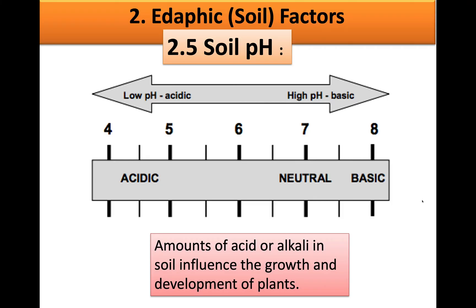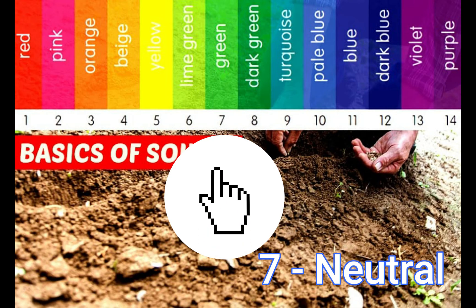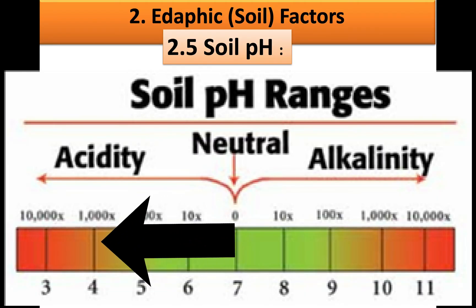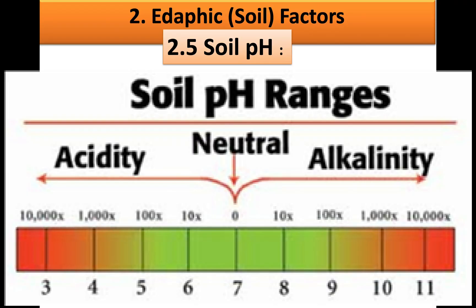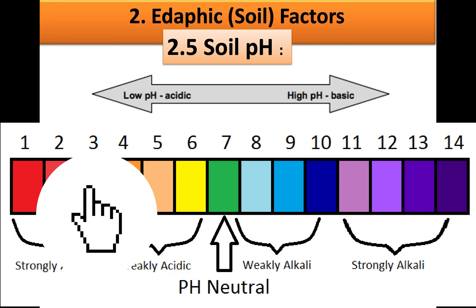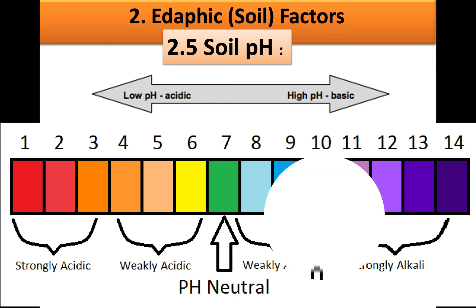Now let's talk about soil pH. pH refers to the acidity or alkalinity of a substance — in this case, how acidic or how alkaline the soil is. It is measured in pH units using a pH scale, which normally runs from 0 to 14. A pH of 7 indicates that the soil is neutral. As numbers decrease from 7 the acidity gets higher, and as numbers increase from 7 so does the alkalinity. Soils generally range from an extremely acidic pH of 3 to a very alkaline pH of 10.